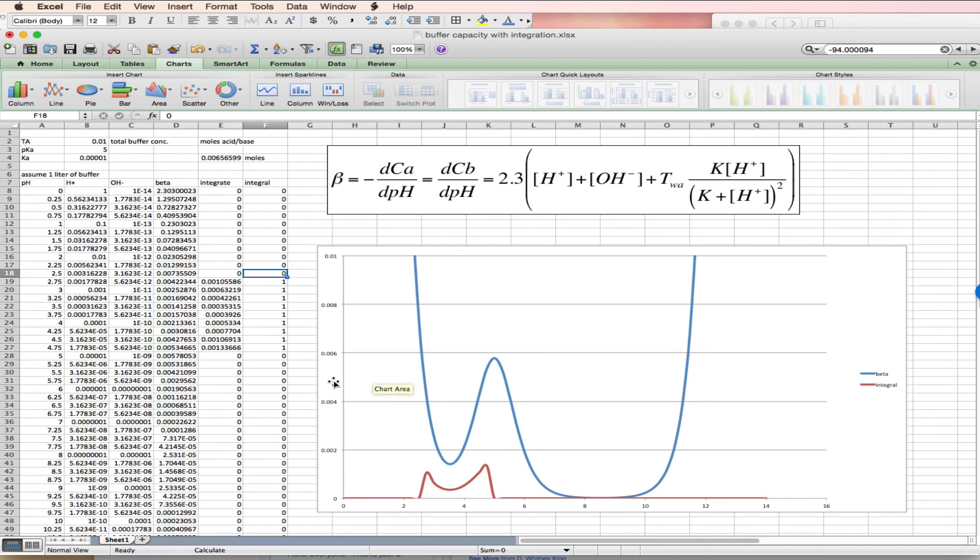So this spreadsheet was designed to give you a qualitative understanding of how buffers work. Important points are that acids make good buffers. Strong acids make good buffers if they're at sufficient concentrations. Strong bases make good buffers if they're at sufficient concentrations. And weak acids and weak bases can be good buffers.